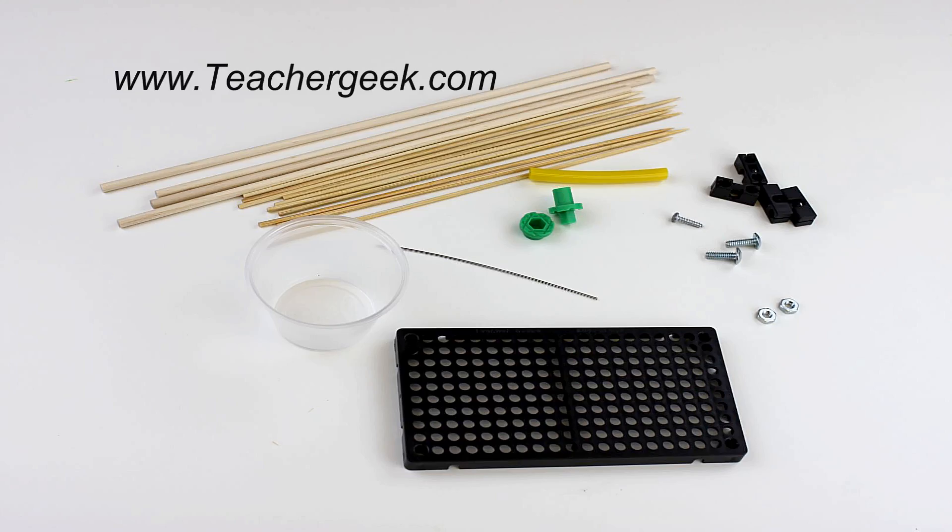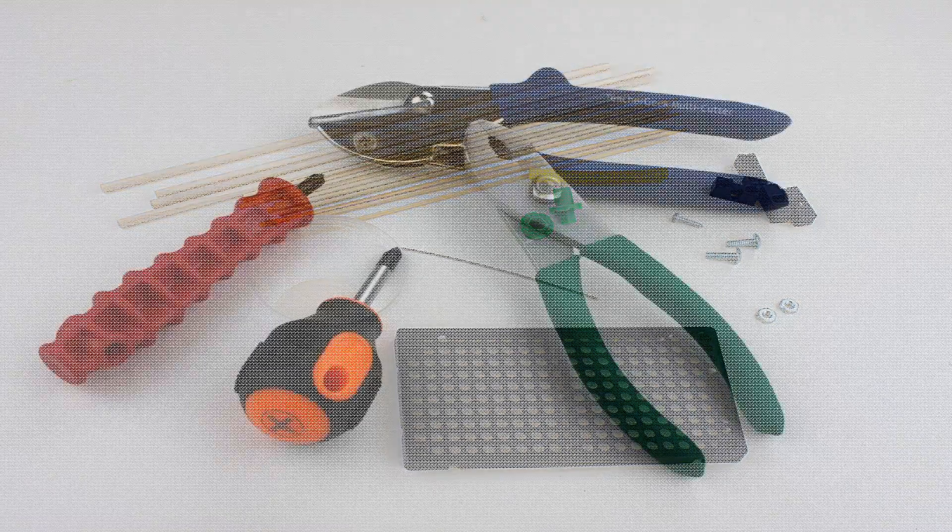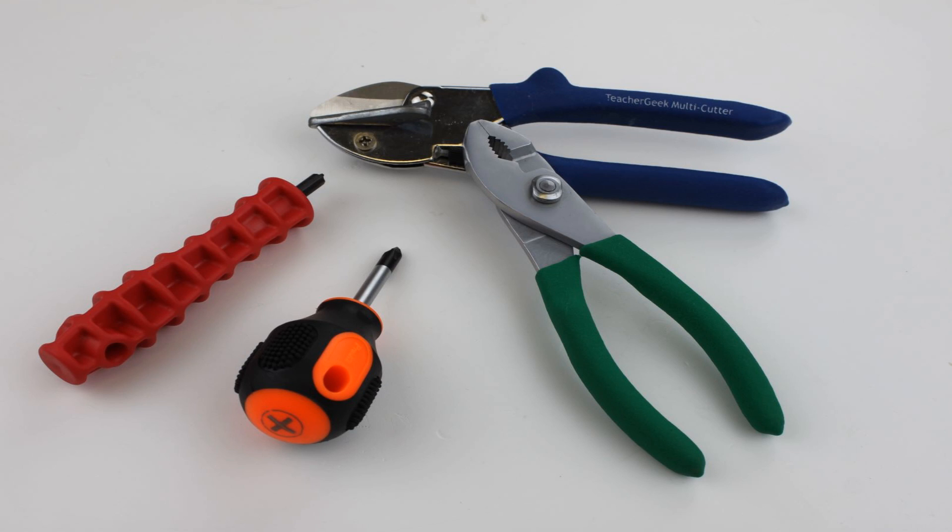A list of the parts needed can be found on the wind lift build guide at teachergeek.com under documents. For this kit you will need a TeacherGeek multicutter and a TeacherGeek reamer.